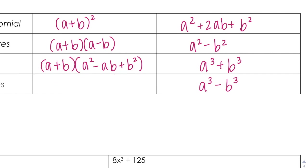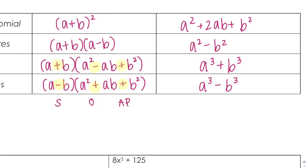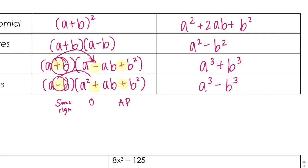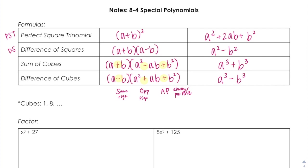Now if it's a minus, it becomes A minus B times A squared plus AB plus B squared. And there's a saying to help you remember which symbols — the saying is SOAP. S stands for same sign, O stands for opposite sign, A stands for always positive. Notice: if it's minus, same sign means minus here; then opposite would be plus; and the last symbol is always positive. So just remember with sum of cubes and difference of cubes, the phrase SOAP.